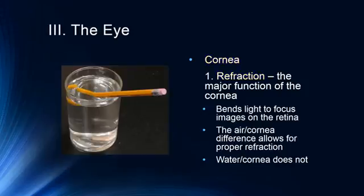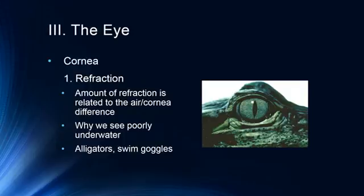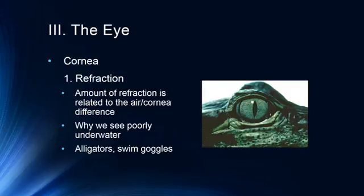As an example of refraction, a pencil in water doesn't look straight because light rays bend differently going from air to water — exactly what the cornea does. This is also why we see poorly underwater. We can reinstate that with swim goggles. Some species like the alligator can close an inner eyelid to see underwater. There is also a species of fish called the anableps, which has a split cornea allowing it to see below and above water simultaneously, spotting both predators and prey at once.